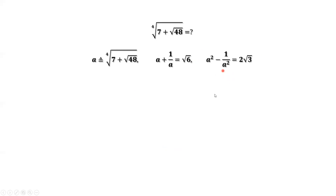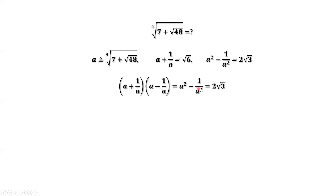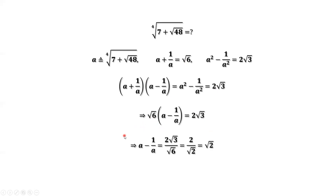Now we compute (A plus 1 over A)(A minus 1 over A). Again, using the same formula, this equals A squared minus 1 over A squared, which equals 2 times square root of 3. The first factor is square root of 6 and the right-hand side is 2 times square root of 3. Dividing both sides by square root of 6, we get A minus 1 over A equals square root of 2.